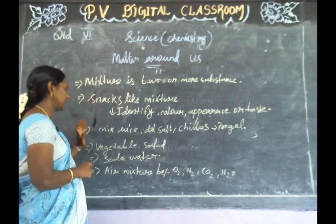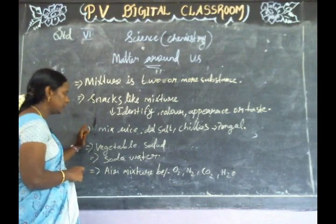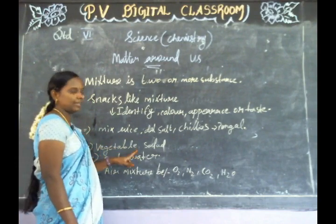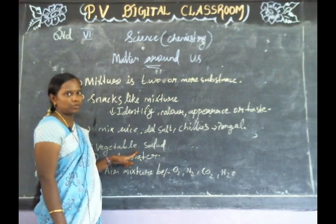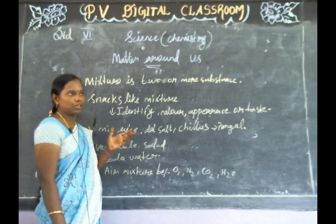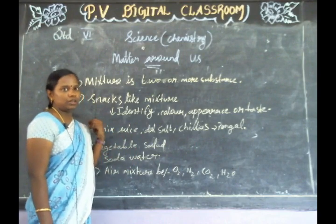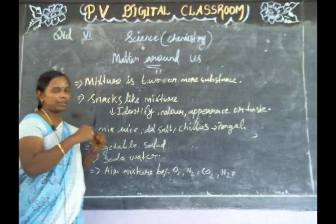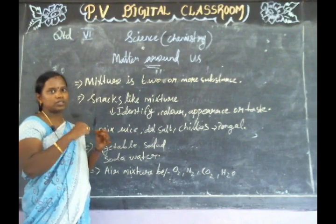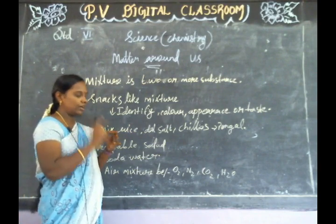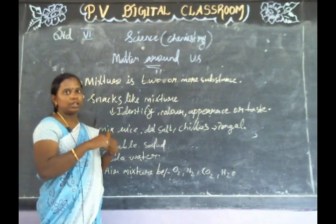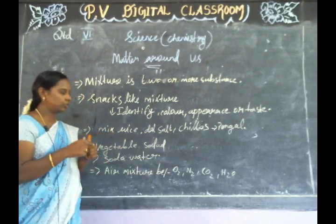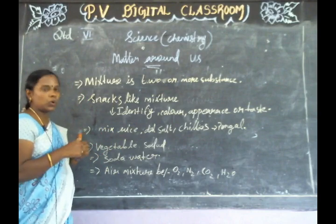Two examples. And then, vegetable salad — vegetable salad is one of the mixtures. Fruits — apple, orange — it is one of the salads.